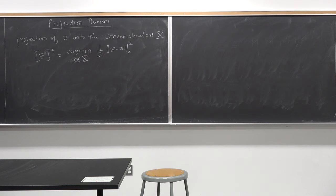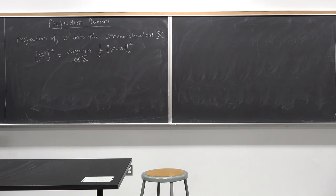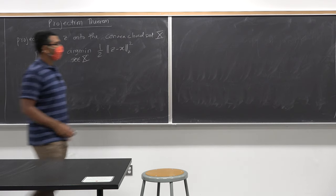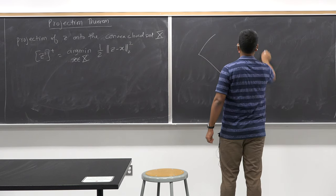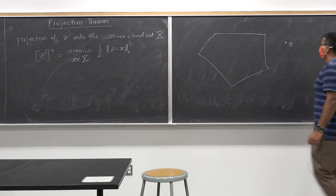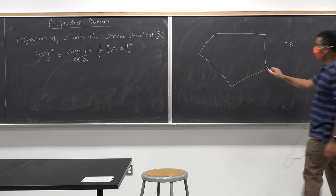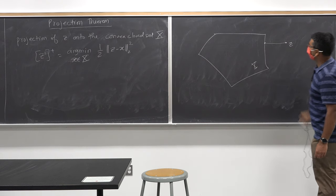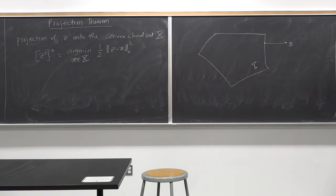As we discussed in the previous class, a projection of a point Z onto the convex set capital X is the point within the set that is at a minimum distance from Z compared to all other points within the set. I have a convex set and a point Z. I want to find the point within the set capital X which is closest to Z — that is the point that is closest to Z and still lies in the set capital X.